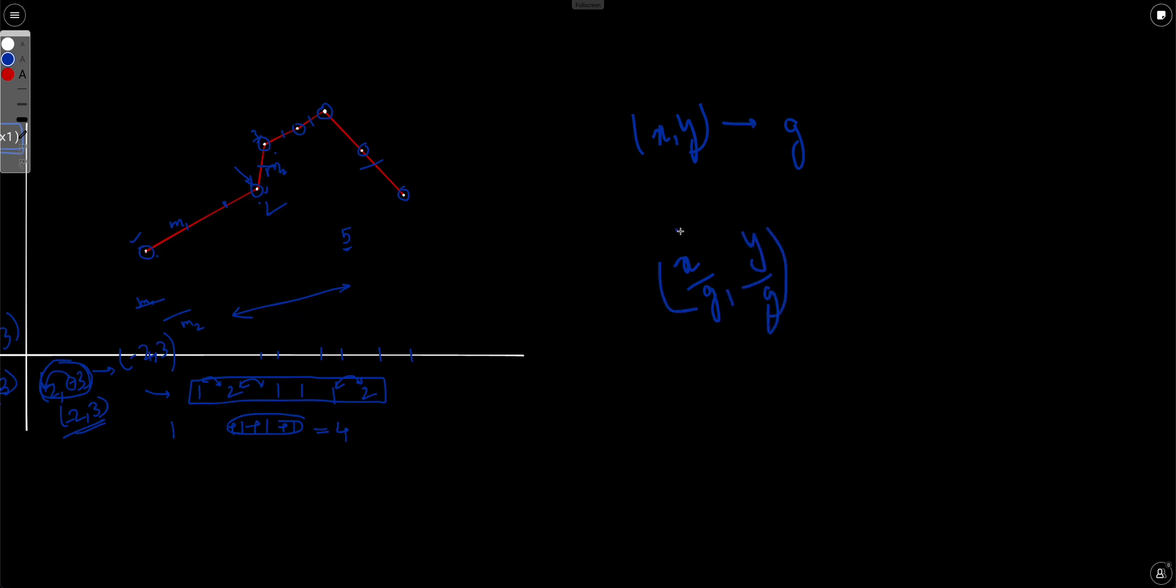Now, if both of them are negative, we will make them positive. Now, if any one of them are negative, we will make this one as negative instead of making this one.